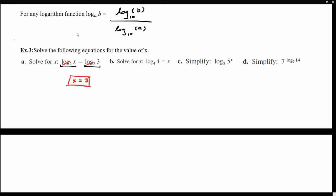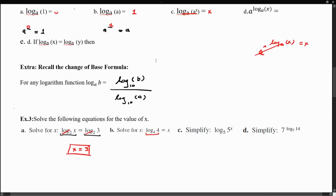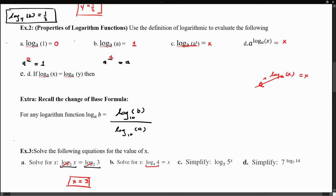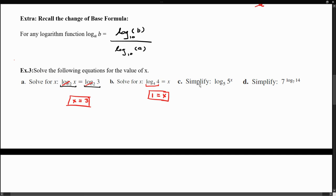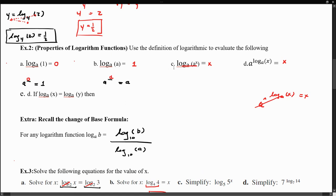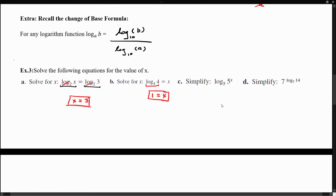For example b, on the left hand side we have a log where the base matches what has been evaluated. According to the second property, if the base matches what's evaluated, the log equals 1. So the left hand side equals 1, and the right hand side is x. Therefore, x = 1. For example c, the base of the logarithm is 5 and the base of the exponent is also 5 — they match. By the third property, they cancel out and what remains is just the exponent, x.